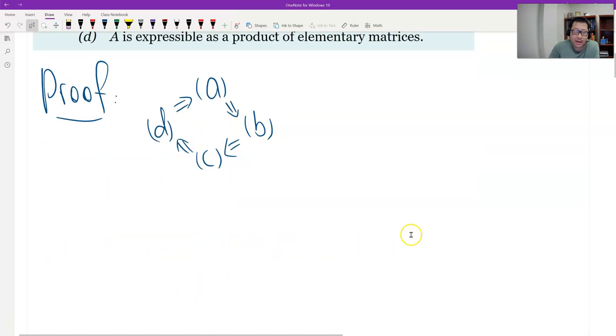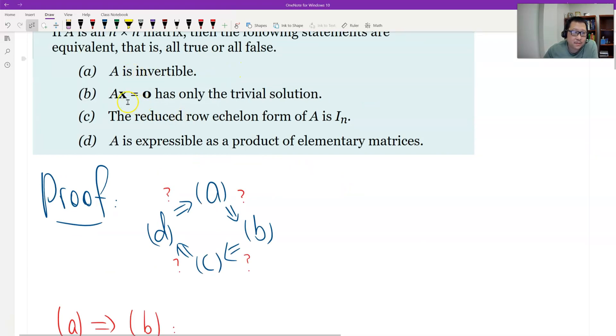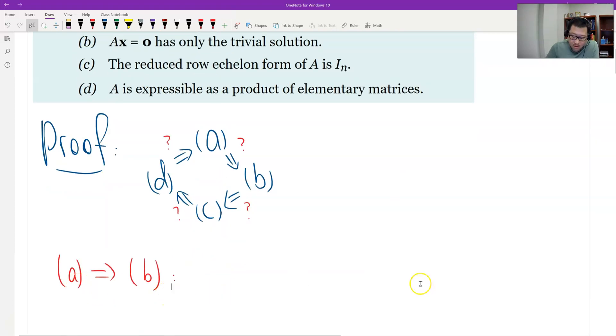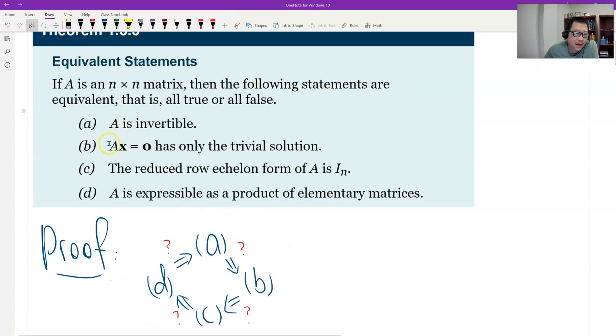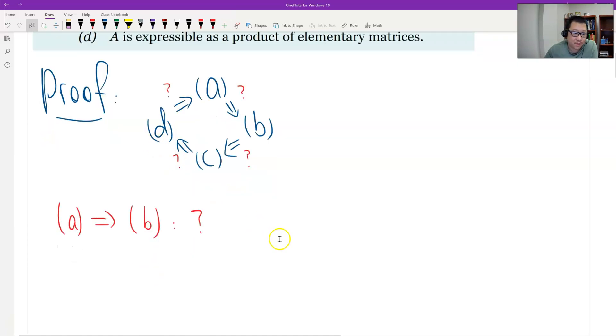So now we look at it one by one. First prove A to B. What is it? A is invertible, B is the linear system has a trivial solution only. Means A is true, why is B true? That's super easy. Because A is invertible, then we can solve for X. Left multiply by inverse of A, so X is zero.